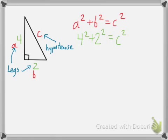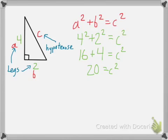Well, four squared means four times four, so that's sixteen. And two squared means two times two, that's four, and that's equal to c squared. From there, sixteen and four is twenty, and that says that's c squared. But how do I get c? Well, I'd need to undo the square on c. So I would take the square root of both sides of this equation. So c is going to be the square root of twenty.